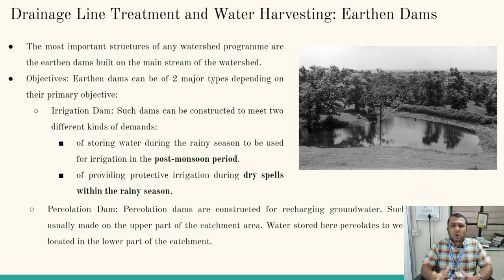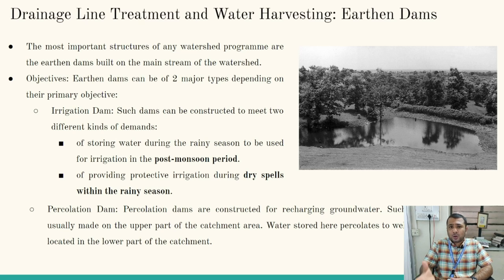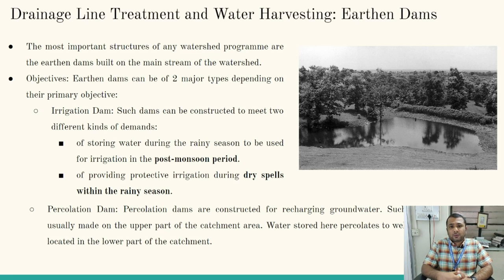An earthen dam is a structure constructed across a river as a barrier to stop the flow of water and to harvest it. It is made up of locally available material — we don't import material from outside. We investigate the soil available in the area, understand its properties, and use it to construct the barrier. So it is cost effective and economical, as we already studied in civil engineering. In this subject, we are also going to understand the design of earthen dams.